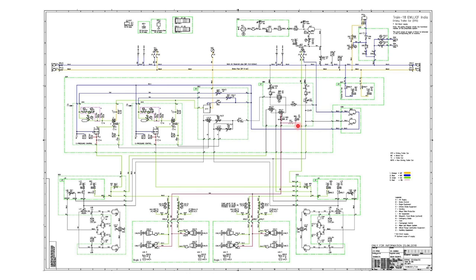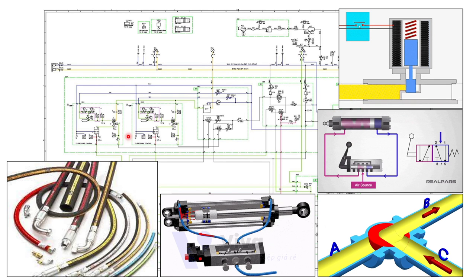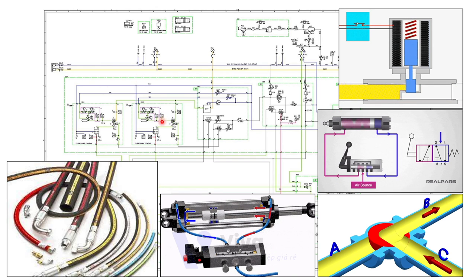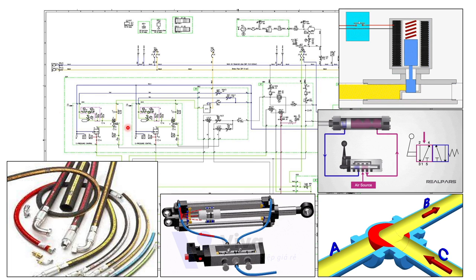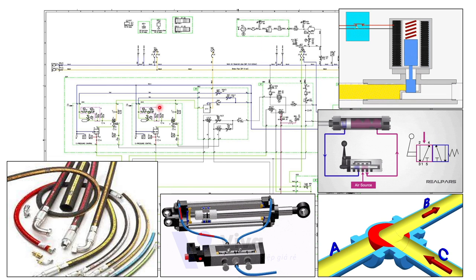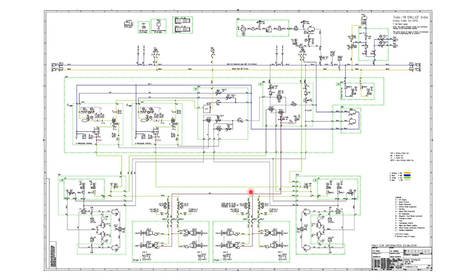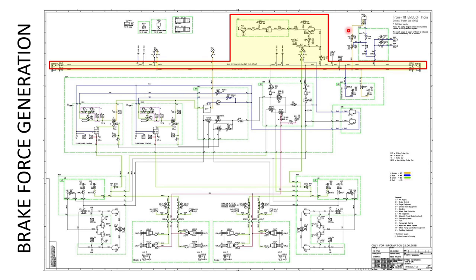The pneumatic circuit might look complicated at first, but it's just a circuit where all the symbols are easy to understand. It consists of pipes connecting different components, transducers or sensors to check pressure, and different types of valves. There are also compressors, dryers, and reservoirs. I like to divide this circuit into three parts: brake force generation, brake force control, and brake force application.